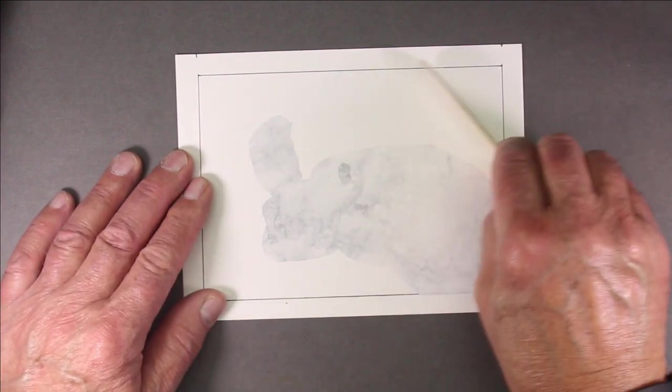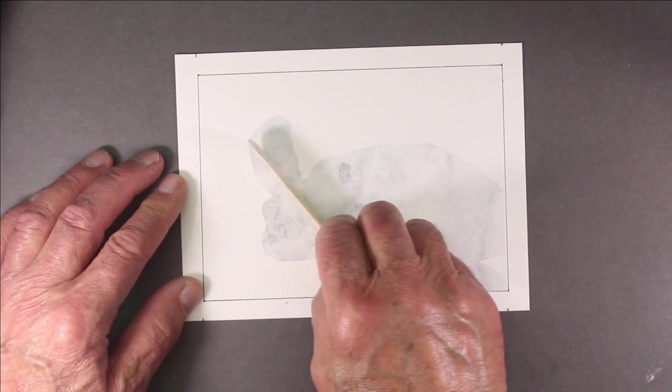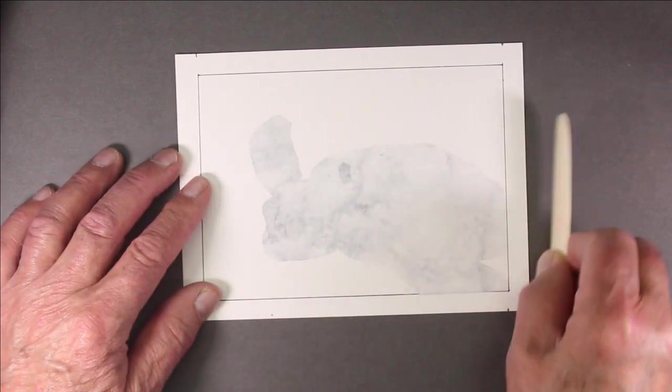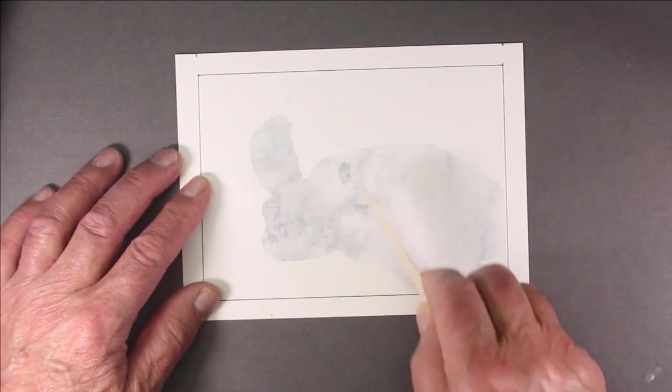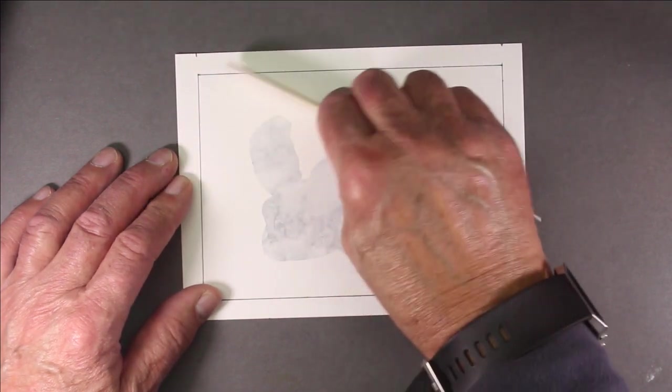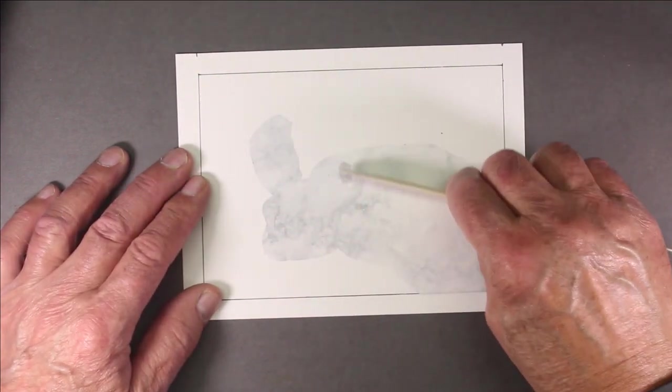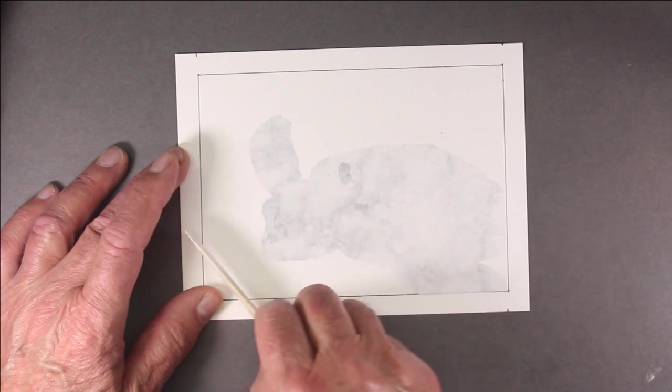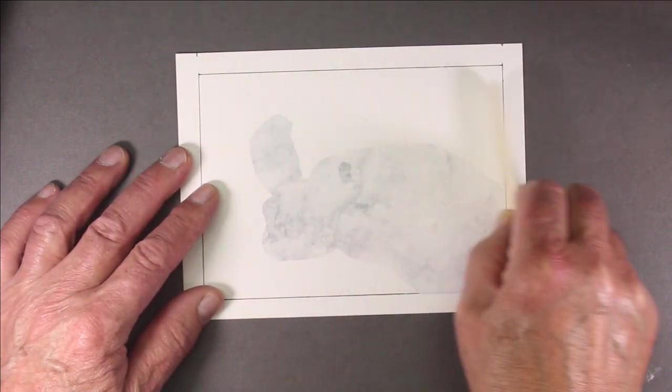Now you can use a credit card or any similar tool just to make sure the edges adhere, and that way you'll have less bleeding when you go to paint with the alcohol ink.